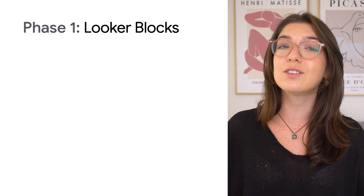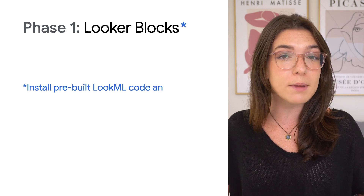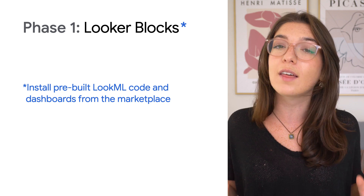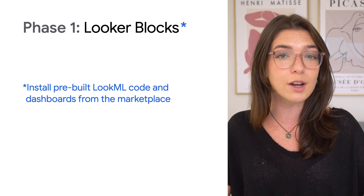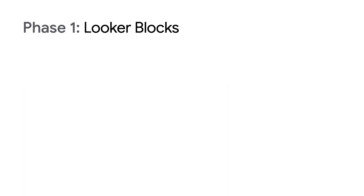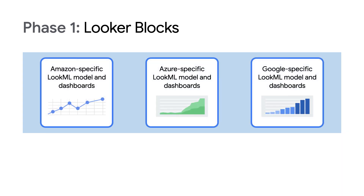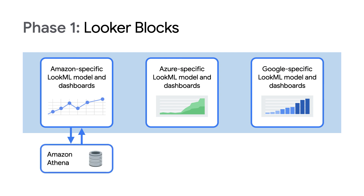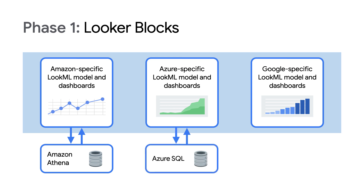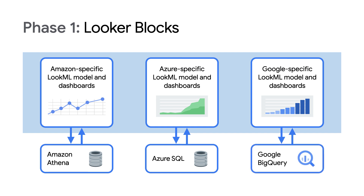The first phase includes access to Looker Blocks — pre-built LookML models and dashboards that can be installed in just a few clicks from the marketplace on your Looker instance. We've created three different blocks, one for each major cloud provider, so that you can pick and choose which to leverage depending on what providers you use. In this phase, the billing data for each provider stays inside of that cloud, so you connect Looker to Amazon Web Services billing data exported into Athena, Azure billing data into Azure SQL Warehouse, and Google Cloud billing data into BigQuery.